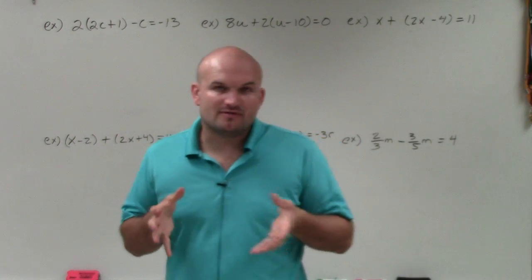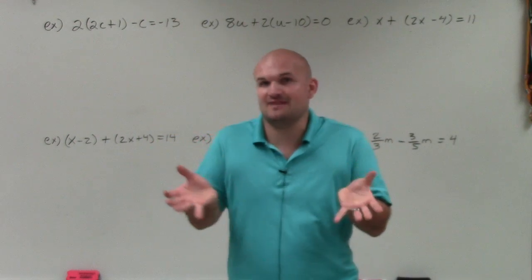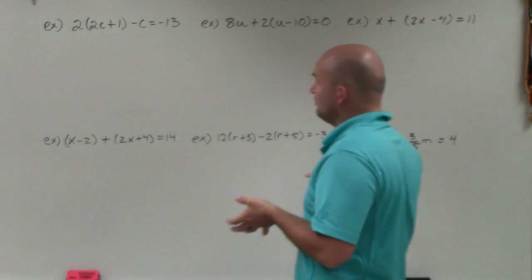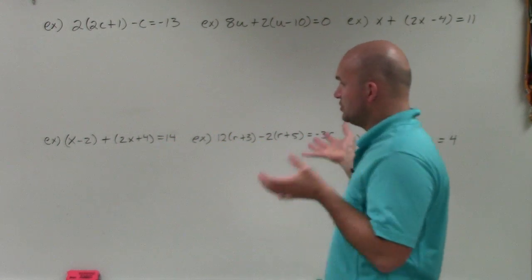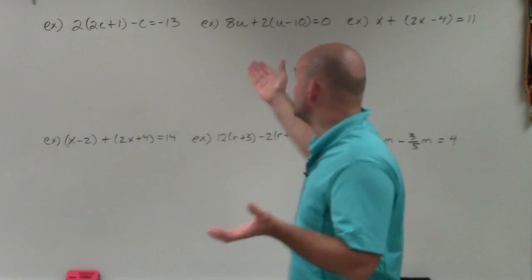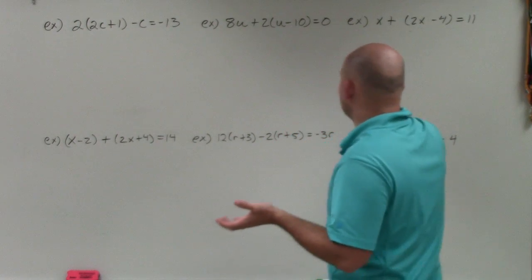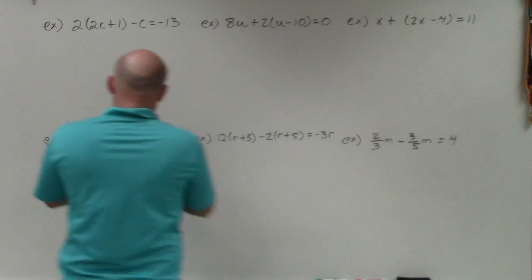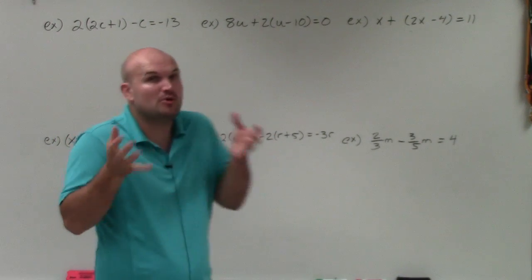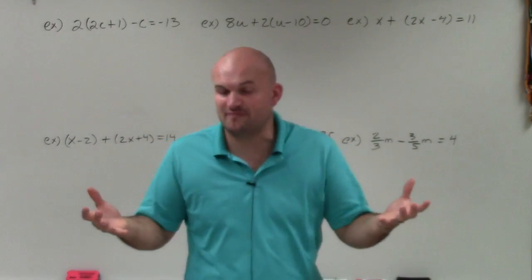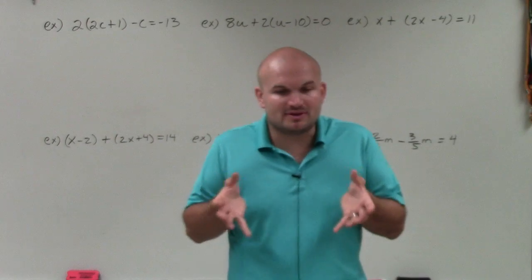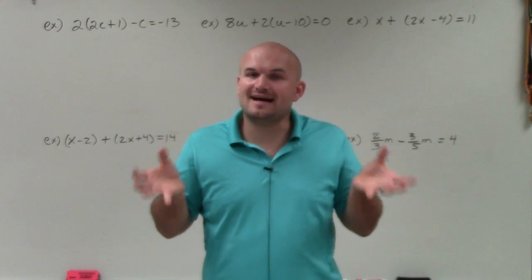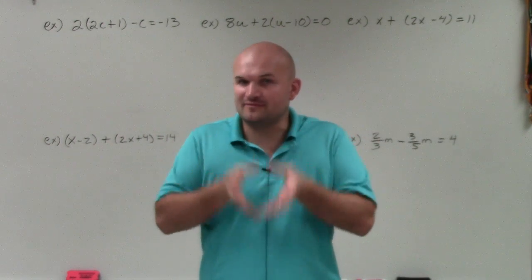When we're solving an equation, the main important thing is we need to identify the variable we're solving for. These are one-variable multi-step equations, so there's only one variable to solve for. Each equation has a different variable — only one variable, but there are multiple forms of that variable. The main thing we need to do to isolate that variable is combine them first.